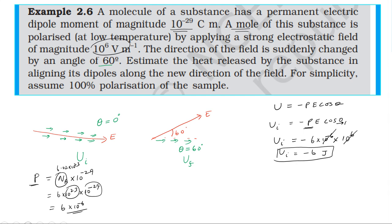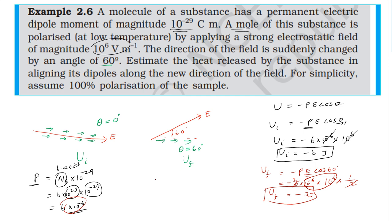The final energy is equal to minus p·E cos 60 degrees. With cos 60 equal to 1/2, the final energy is minus 10 power minus 6 multiplied by 10 power 6 multiplied by 1/2, giving final energy equals minus 3 joules. The heat released is the difference: minus 3 minus minus 6, which equals plus 3 joules.